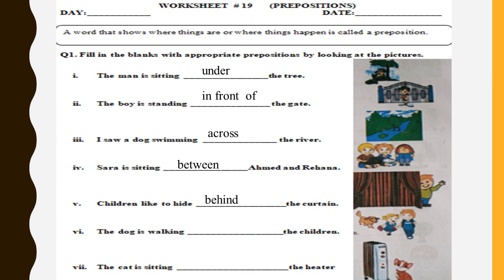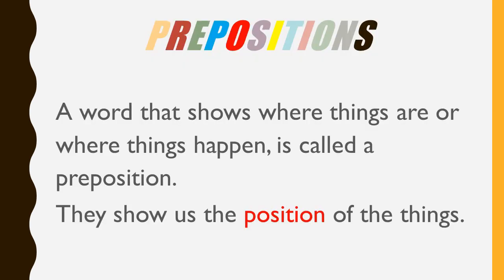Fifth: children like to hide ___ the curtain. Very good — children like to hide behind the curtain. Sixth: the dog is walking ___ the children. Which preposition will come here? Yes, the dog is walking behind the children. Next: the cat is sitting near the heater. Look at the picture — is it correct? Yes, the cat is sitting near the heater.